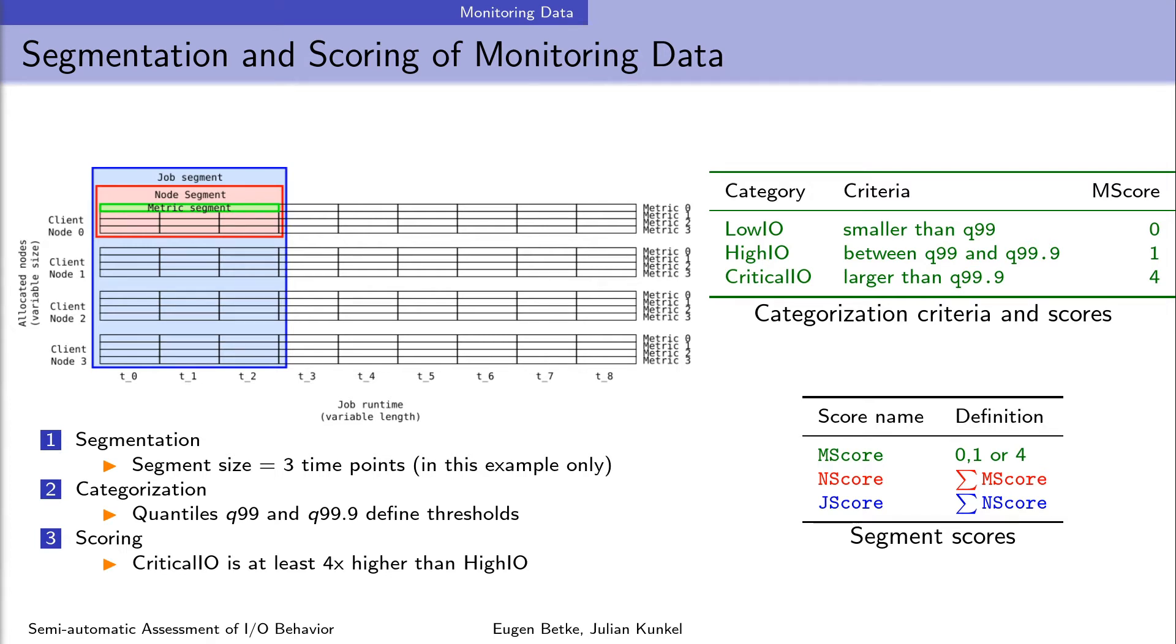Additionally, assume we have a writing metric with the observed performance of 200, 300 and 400 MB per second during the three time points. Then the mean performance for this segment will be 300 MB per second. The question is now what kind of performance is it? Is it low, high, or critical for this particular storage system? And to answer this question we need a large number of segments to compute reliable statistics.